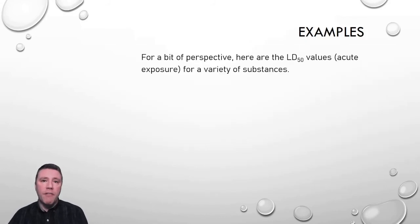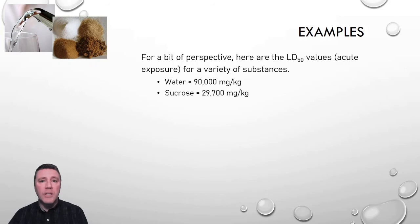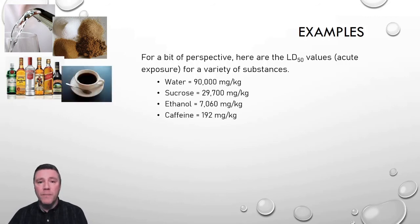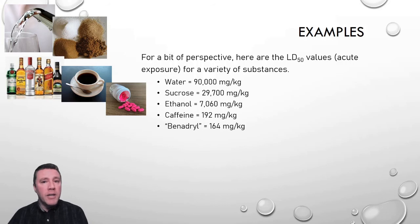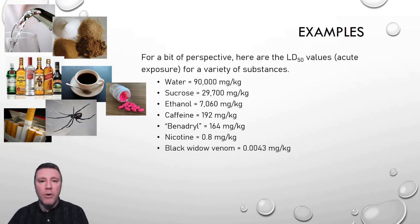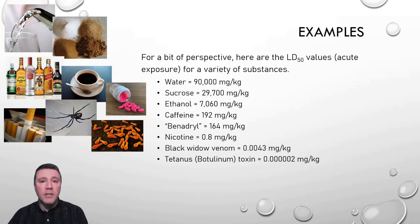Although you will never be expected to have memorized LD50 values for any substances, it is nice to put some of them into perspective, including ones you're probably exposed to every day. Water and table sugar have relatively high LD50 values — it would take quite a bit of these to cause mortality. Alcohol is significantly more toxic, but not nearly as toxic as caffeine. Diphenhydramine hydrochloride, the active ingredient in Benadryl, is slightly more toxic than caffeine, but not nearly as dangerous as nicotine found in cigarettes and vaping juice. Hopefully you never encounter a black widow's venom, but botulinum toxin is nearly universally agreed upon as the most toxic substance known, with an LD50 of 1 to 2 nanograms per kilogram.